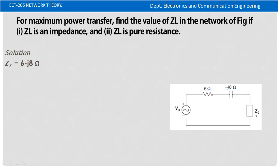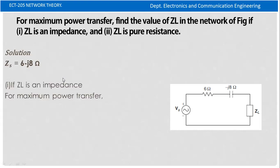Zs is the impedance. The second condition: ZL is equal to Zs conjugate. For maximum power transfer, ZL is equal to Zs conjugate. The sign changes from minus to plus for the conjugate.